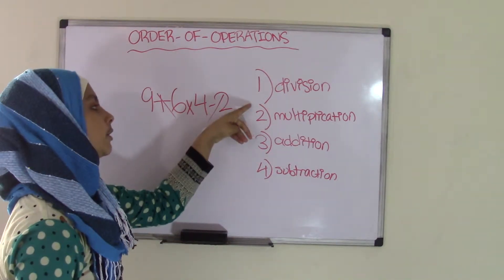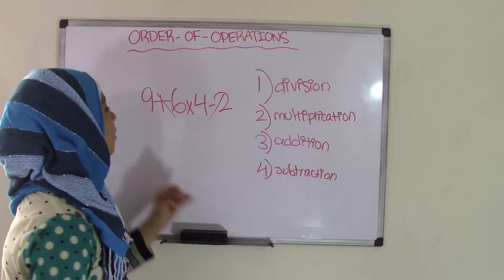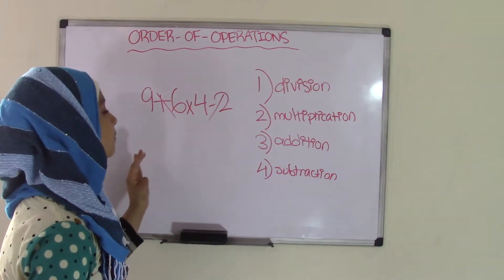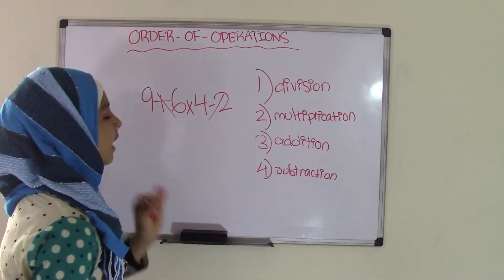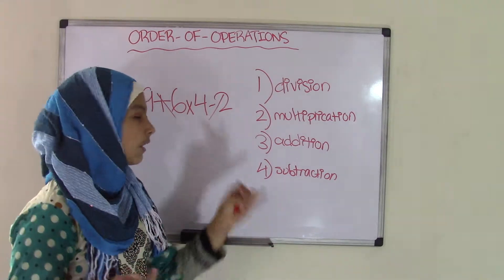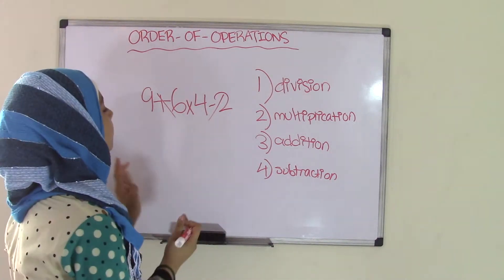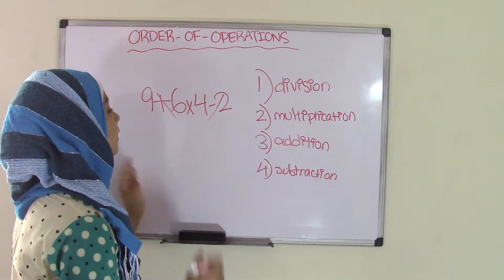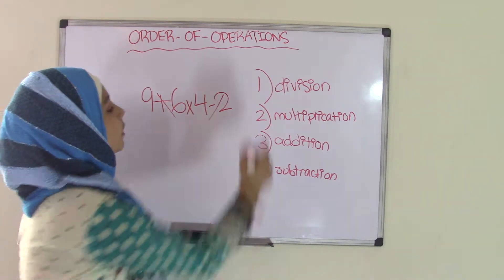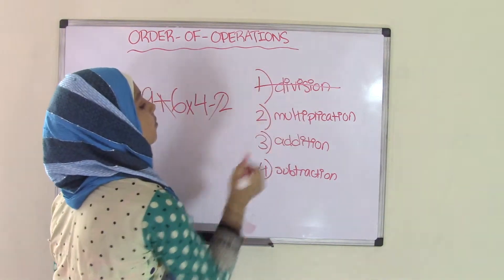So now the first operation that you're going to use is division. But if you see here, this problem does not have division. So not all expressions will have all four operations, but most likely they will. But in this operation, we do not have anything that has to do with division. So we're going to cross that out and move on to multiplication.